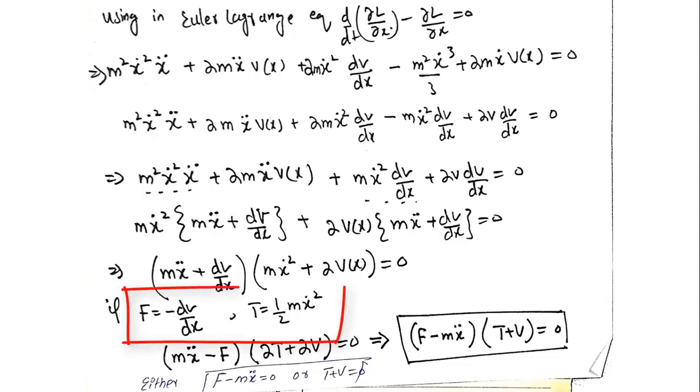Since we know this potential is a differentiable function of x, if this potential is conservative, I can derive a force from this. It means dv by dx is equal to minus f. This m x dot square is equal to 2T since T is equal to half m x dot square, and we have 2v, and this is equal to zero.